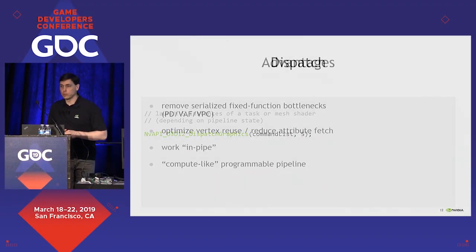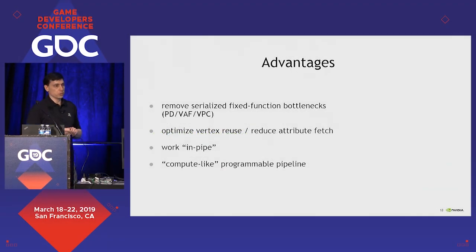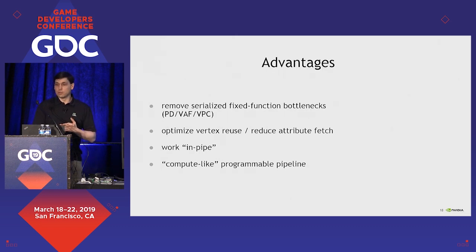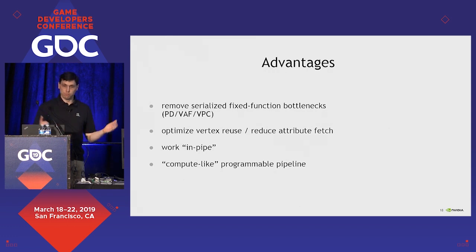So why would you want to use mesh shading? What are the main advantages? Because why would you bother doing all this extra work? The first one is — we've had discussions for years where people were calculating number of triangles per clock into geometry pipelines, complaining and saying, 'I could write better shaders. Your fixed function pipelines are too slow.' Well, it's true. Every time you have a piece of fixed function silicon, there is a maximum amount of bandwidth, which means it eventually, invariably, turns into a bottleneck. Because you try to push more triangles than you can through that pipeline. It doesn't scale — that's basically the bottom line.